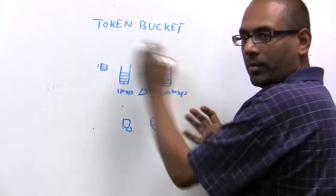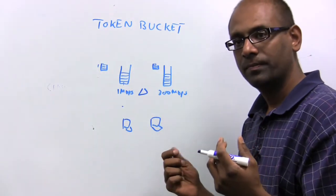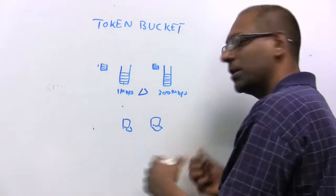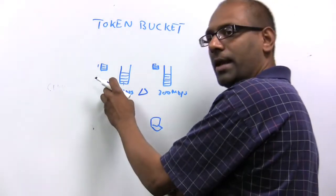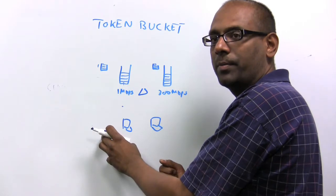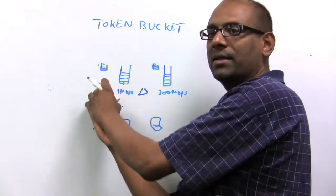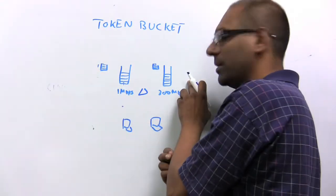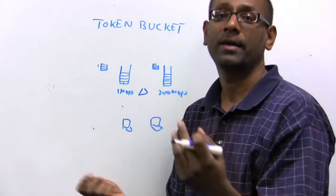Since we are giving equal number of tokens to all of these stations, logically what will happen is, after you take your transmission with 1 megabit per second, for you to gain back the same number of tokens, the other device would have transmitted 300 times the packets.